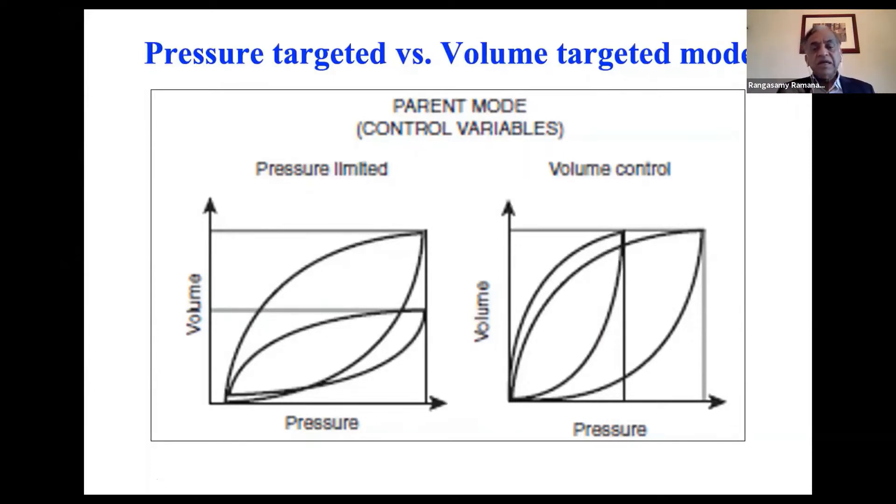Volume guarantee mode needs a flow sensor, especially at the Y, and adds expense, adds some dead space. That is why a lot of centers, even in the US, are still using pressure control mode as the most common one.